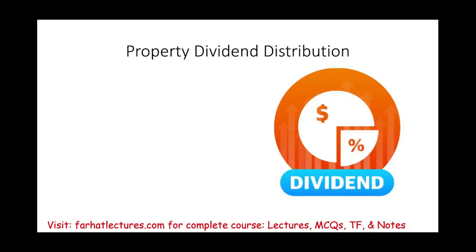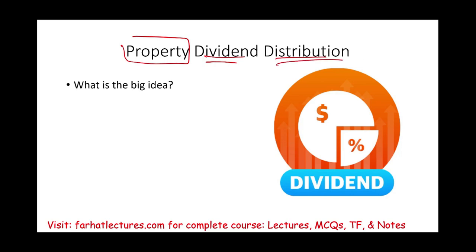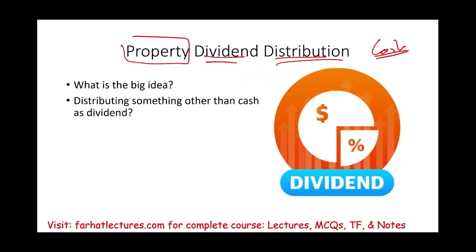Hello and welcome to the session in which we will discuss property dividend distribution. When we think of dividends, we always think of cash because when the company distributes dividends to shareholders, they distribute cash — generally speaking, this is what investors would like to have, because you can use cash for anything. Sometimes the company might distribute something other than cash: inventory, a piece of land, a vehicle — anything they would like.